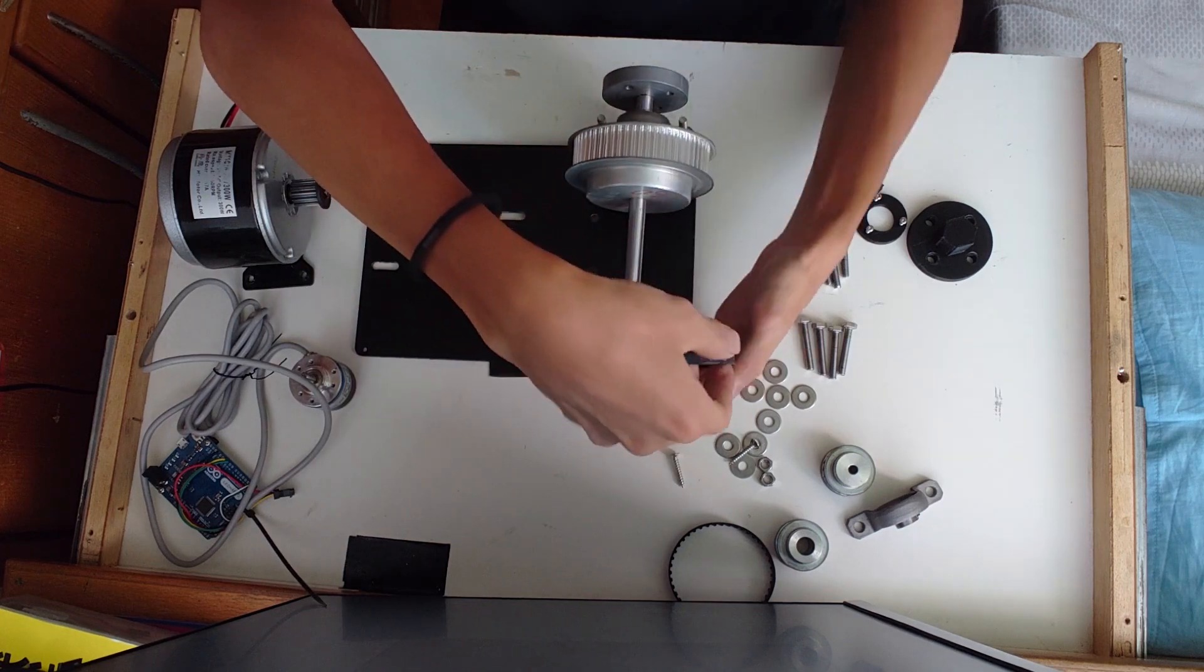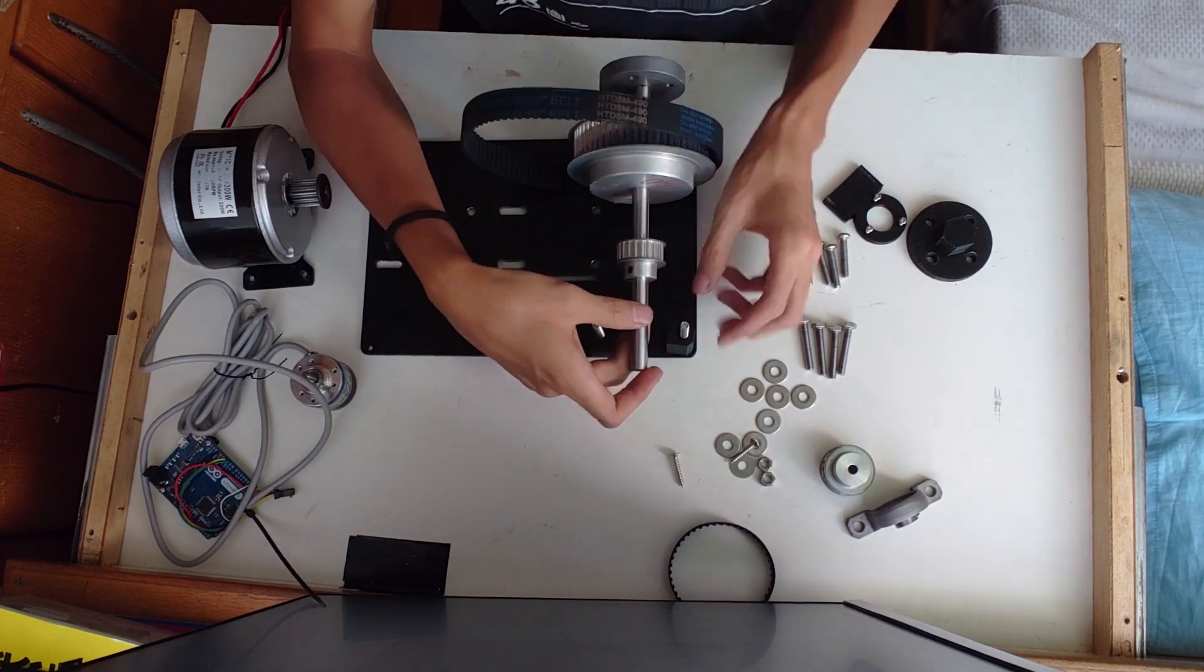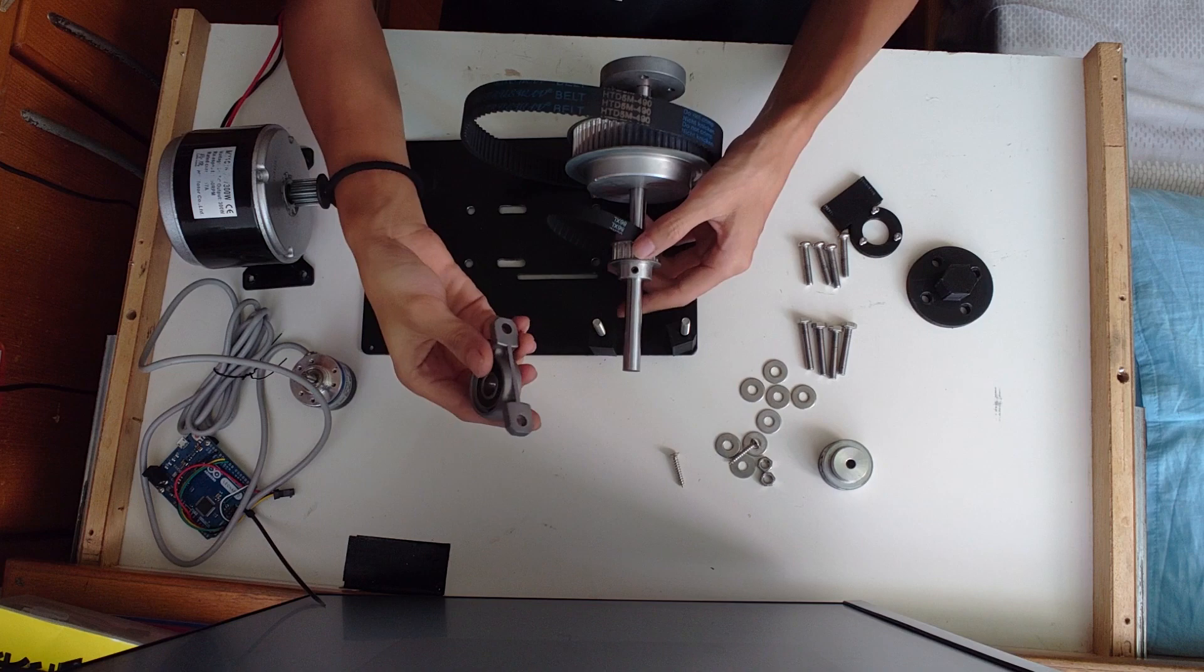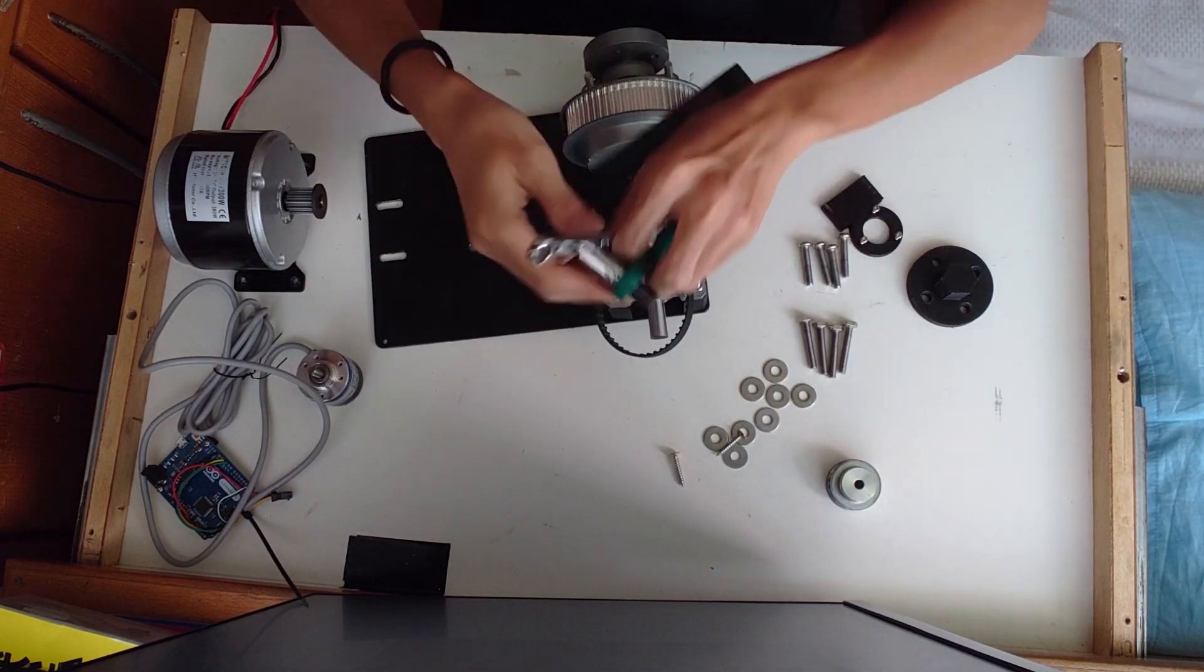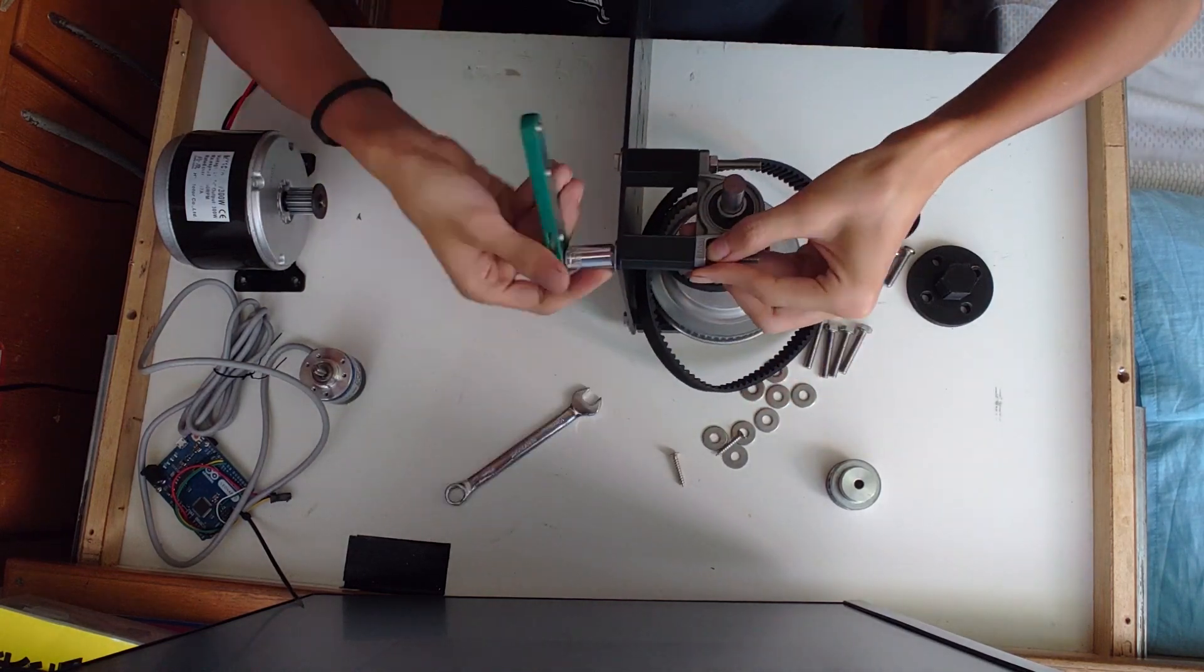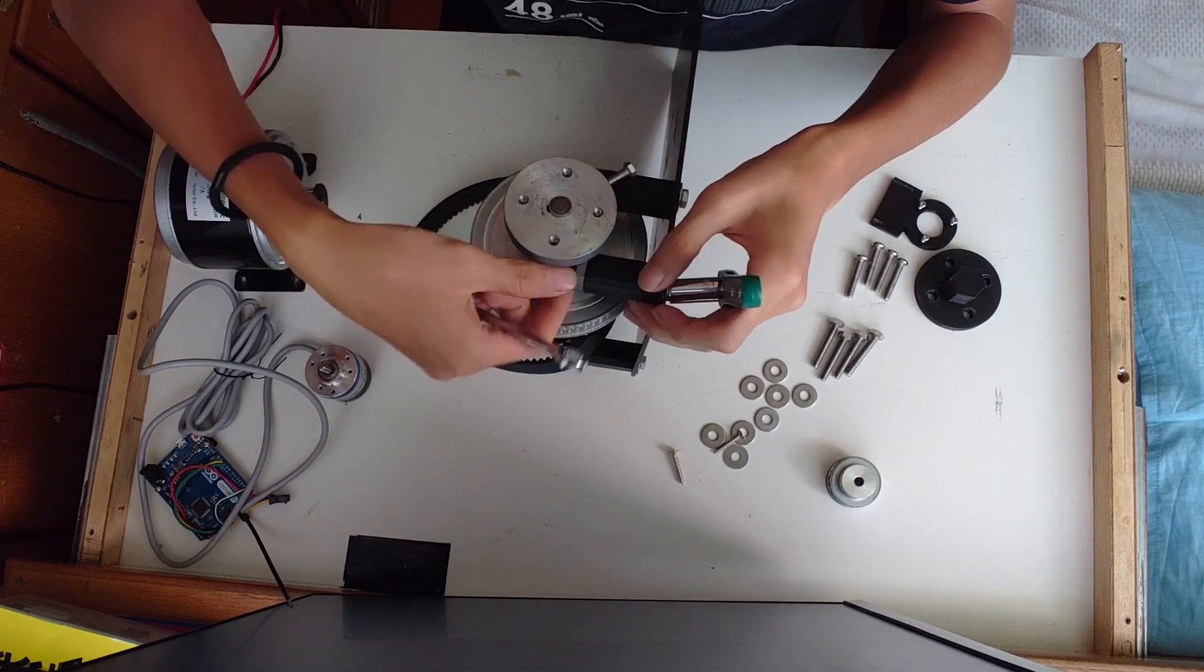Then put on the belt and the timing pulley, then put on the last pillow block bearing unit. Then use the tools to tighten up all the screws. Make sure all of them are nice and tight.